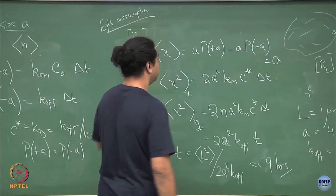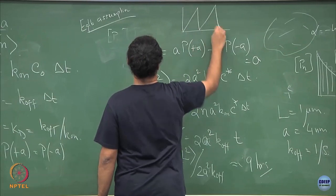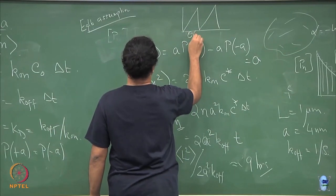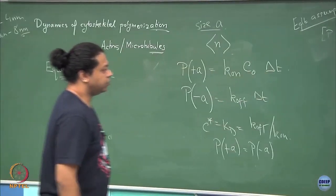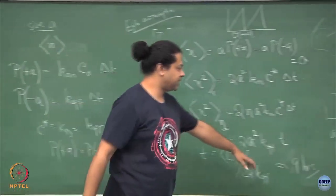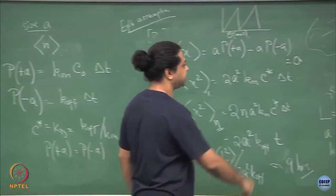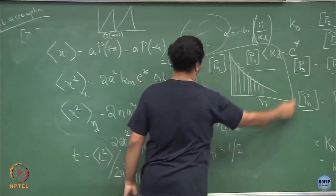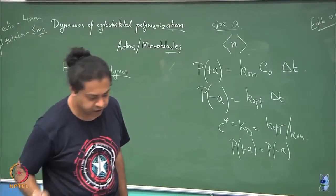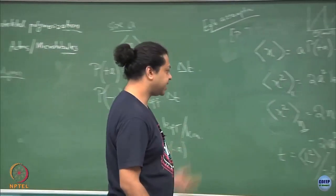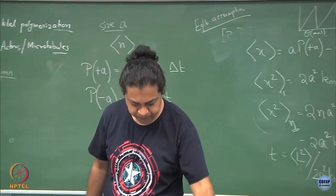In order to generate a mean length of around 1 micron through this equilibrium process, it would take around 9 hours, which is simply too long. If you think back to the microtubule dynamical instability plot, they grew and shrunk in a matter of minutes — of the order of a few minutes. So although this approximation generates the correct distribution which is an exponential, it gets the time scales completely wrong. The equilibrium model is not good enough to explain the time scales, as there is no reason to assume this is an equilibrium system.